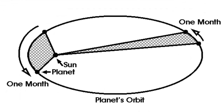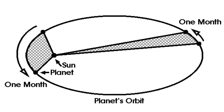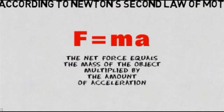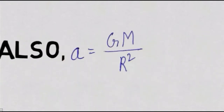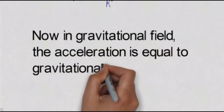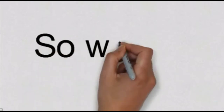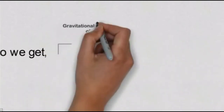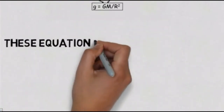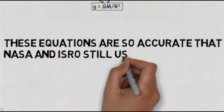Newton then used this to understand Kepler's laws and to find the gravitational acceleration of any planet. Mathematically, from Newton's second law, F_net = ma, we get a = GM/r². In a gravitational field, this acceleration equals small g, so g = GM/r². These equations are so accurate that NASA and ISRO still use them for space missions today.